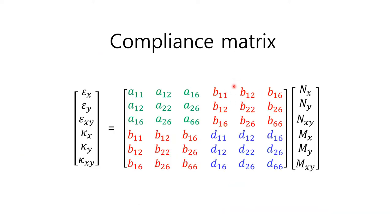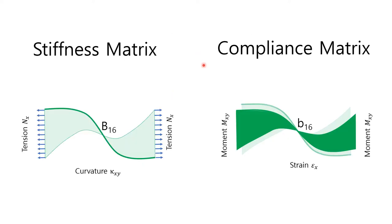This matrix equation shows the full elements of the compliance matrix for the laminate plate. The strain and curvature can be expressed in terms of forces and moments with the compliance matrix. Let's take one example to compare the roles of stiffness and compliance elements. The left picture shows that curvature kappa_xy produces tension in x in proportion to stiffness matrix element B16. On the right picture, moment Mxy produces strain epsilon_x in proportion to compliance matrix element B16.